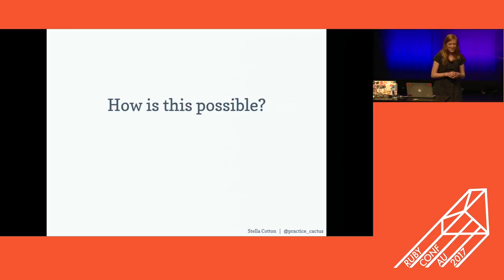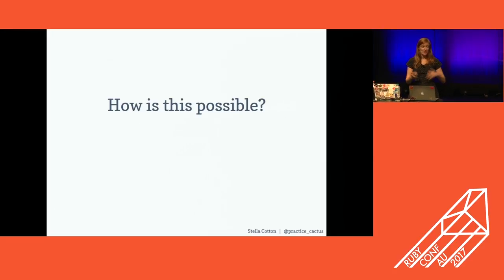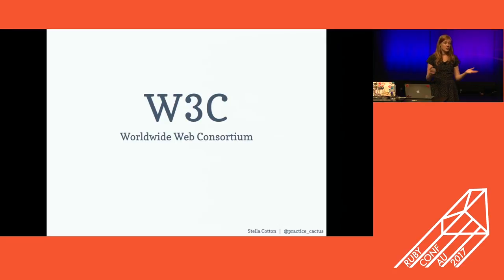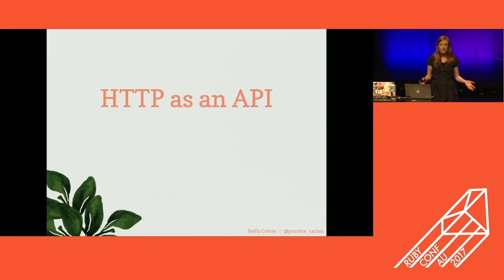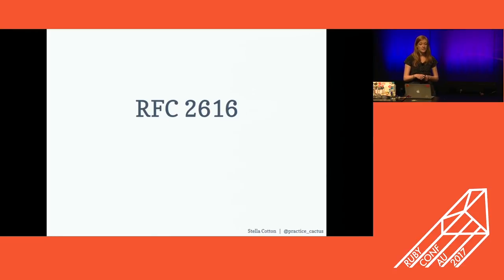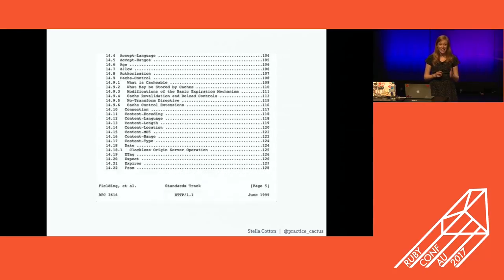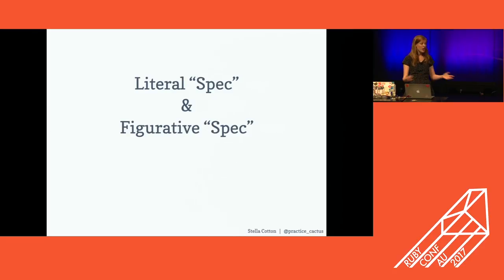Spoiler alert — how is this possible? This is the magic of a standards body called the W3C, the World Wide Web Consortium, formed in 1994 to create standards that form the open web. They created this API that the whole web uses today to communicate over HTTP, and they established it in a document called RFC 2616. It's a 175-page document that outlines the HTTP 1.1 API, and it's what we use every day — unless you're using HTTP 2, then your spec is going to be a little different.